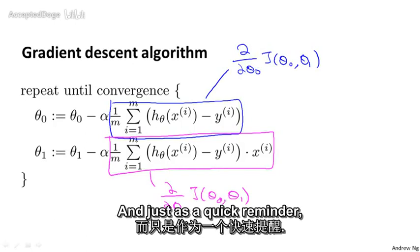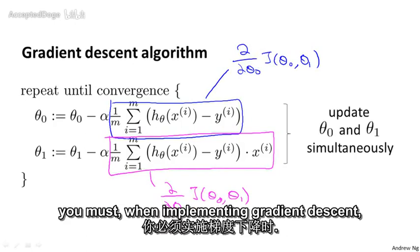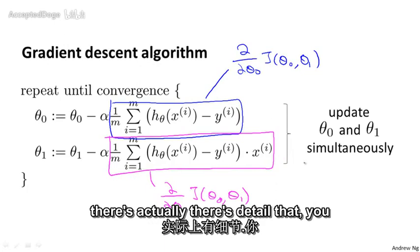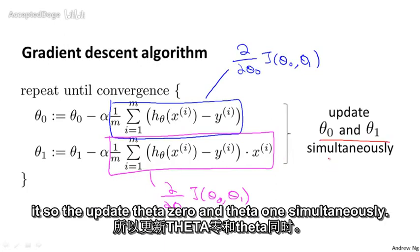Just as a quick reminder: when implementing gradient descent, there's actually this detail that you should be implementing it so that you update theta zero and theta one simultaneously.